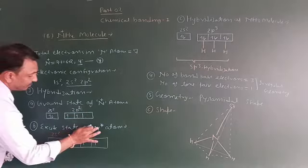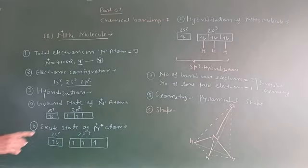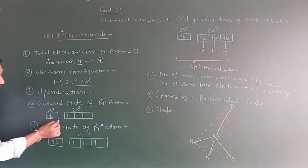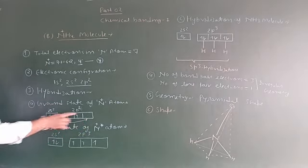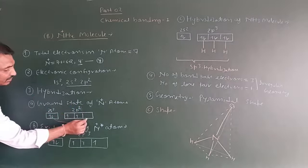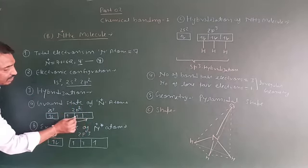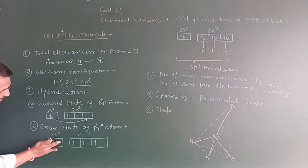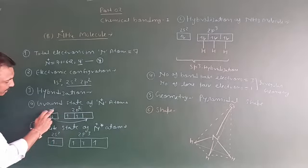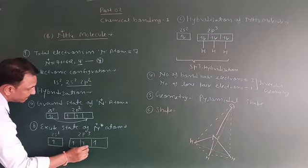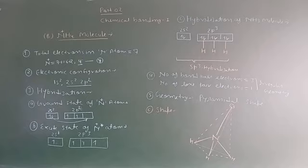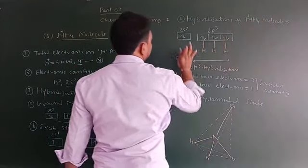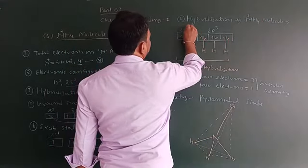Excited state of N+ star atom। N+ के पास 4 electrons हैं। 4 ligands (4 hydrogen) हैं NH4+ में, इसलिए 4 vacant orbitals चाहिए। One electron from 2s moves so we get: 2s1, 2p3 — सभी 4 orbitals में 1-1 electron।